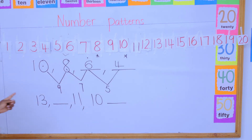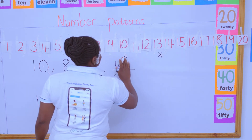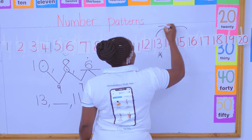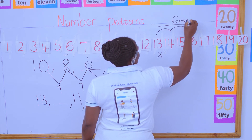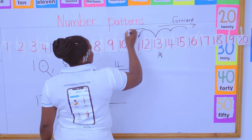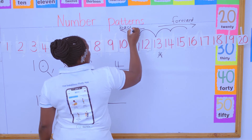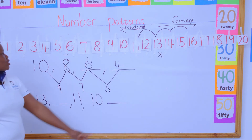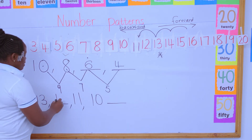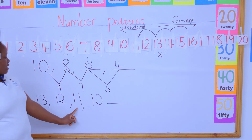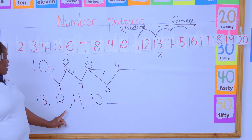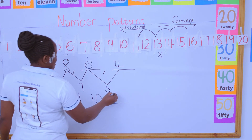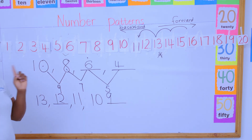Go back to your numbers and ask yourself: my starting number is 13. Am I counting going forward or going backward? When the arrow points this way it is forward, but when the arrow points going this way it is backward. Once you are at the starting number, ask which number is missing. I have 13 — before 13, twelve appears. After 13 we have 12, then 11, then 10, and which number is after 10? It is 9.